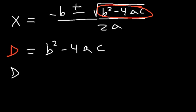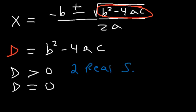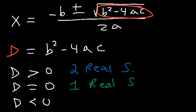Whenever the discriminant is a positive value — that is, if it's greater than 0 — you're going to have two real solutions. If the discriminant is equal to 0, then you're going to have one real solution. If the discriminant is less than 0, then you're going to have two imaginary solutions.